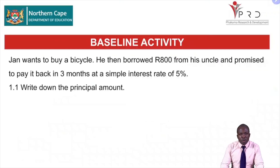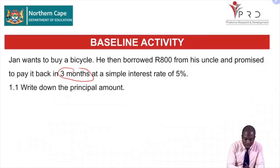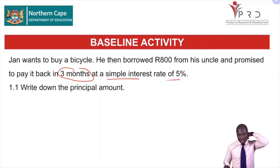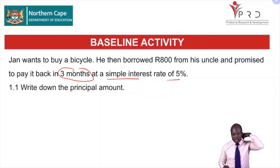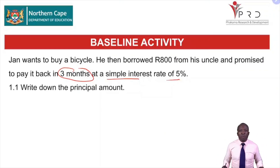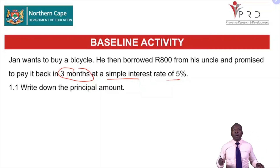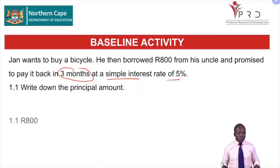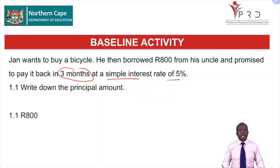Here is one baseline activity. A person borrowed 800 rand and has decided to pay it back in three months at a simple interest rate of 5%. Write down the principal amount — the main amount that the person borrowed. When we talk of principal amount, we don't mean principal like the principal of the school; we are talking of the amount that was borrowed. So I was hoping that you wrote 800 rand.